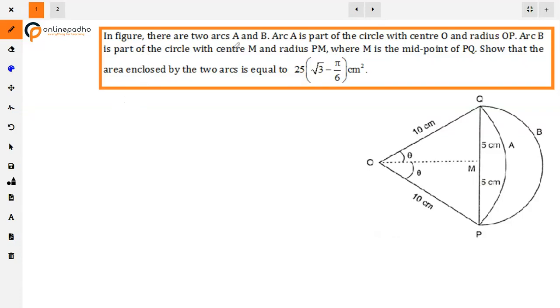The question is, in figure there are two arcs A and B. Arc A is part of the circle with center O and radius OP. Arc B is the part of the circle with center M and radius PM, where M is the midpoint of OQ. Show that the area enclosed by the two arcs is equal to 25 root 3 minus 5π/6 cm². Given that we have two arcs here, one is A and the other is B.